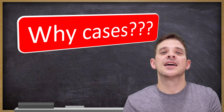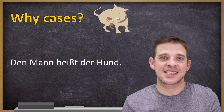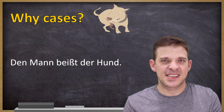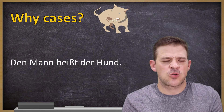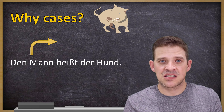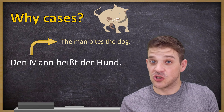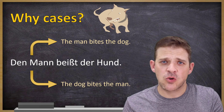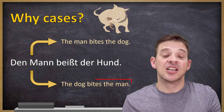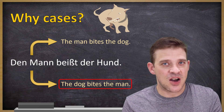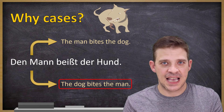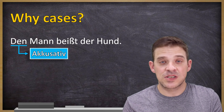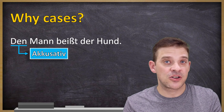Why do we have these cases? Let's look at this sentence: 'den Mann beißt der Hund.' Beißen means 'to bite.' So the question is: who bites whom? Is it the man bites the dog, or is it the dog bites the man? Logically, it's the dog bites the man. But how do we know this? That's why we need cases. The article 'den' is an accusative article.